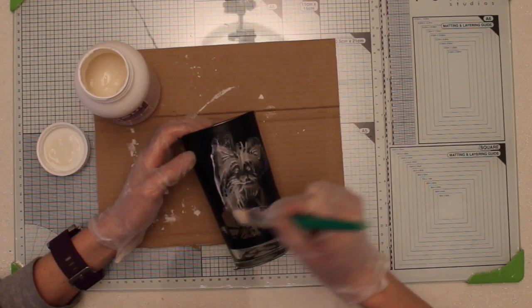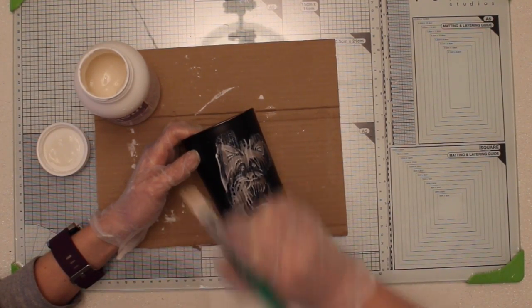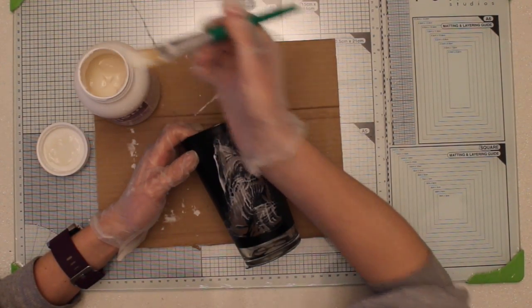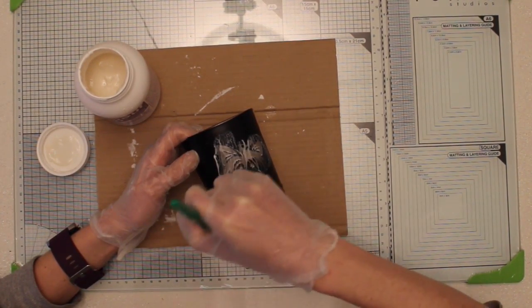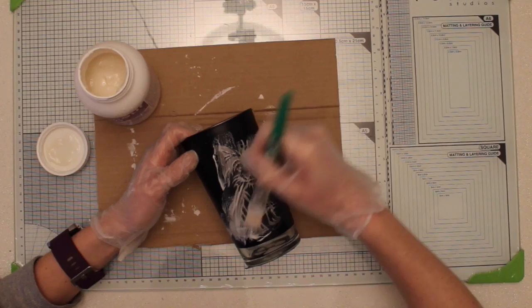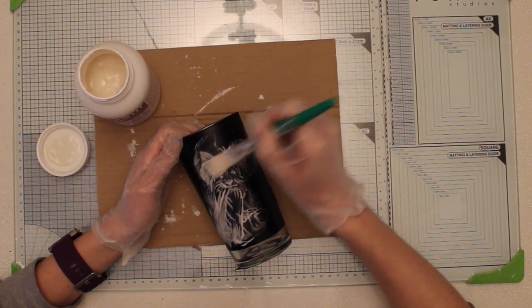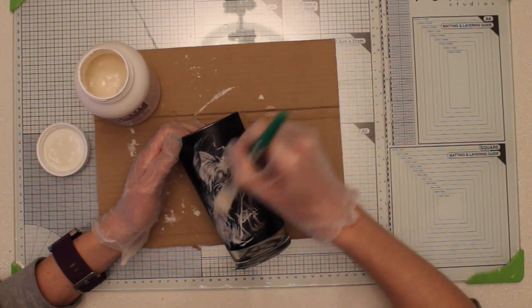So when I'm doing this I don't like to do it in the same direction, I like to change the direction up. This just ensures that the etching cream works all into the nooks and crannies of your vinyl to give a really crisp clear coat.